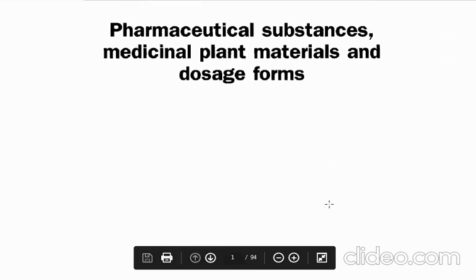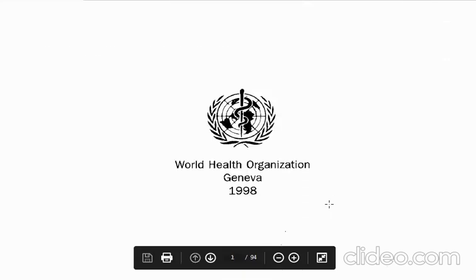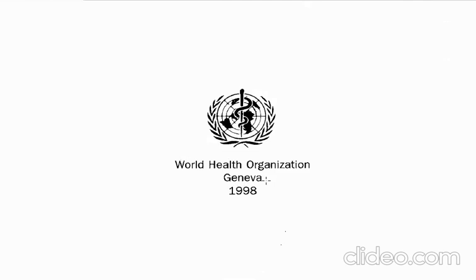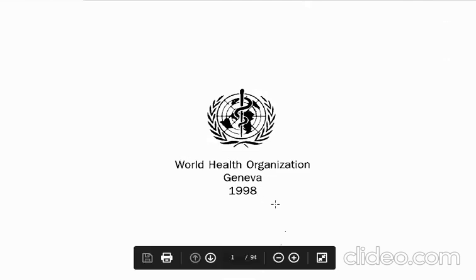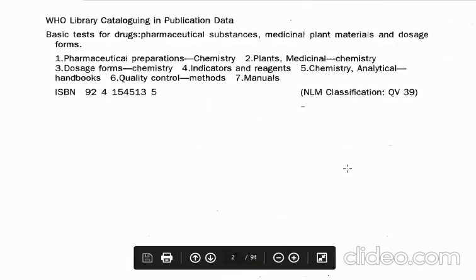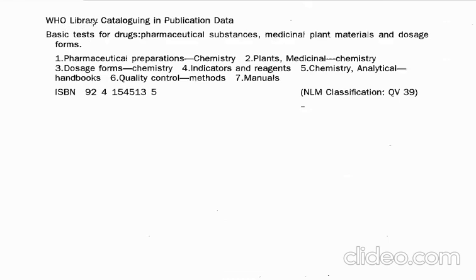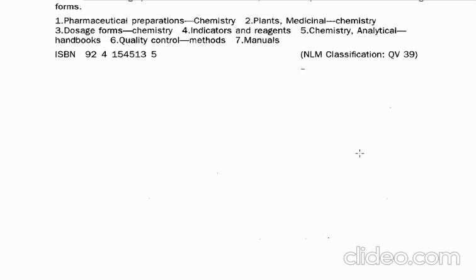WHO has given the guidelines for the different basic tests for drugs. Here you can see this is the symbol of the World Health Organization, whose head office is in Geneva. In 1998 these guidelines were launched. Here in the WHO library cataloging in publication data, the basic tests cover three things: pharmaceutical preparation chemistry, plant material chemistry, dosage form chemistry, and indicators and reagents chemistry and analytics. So let us discuss one by one.